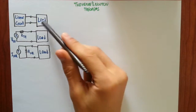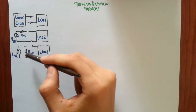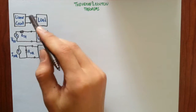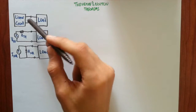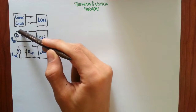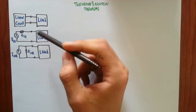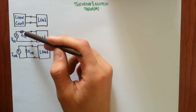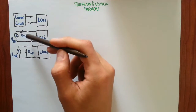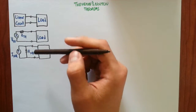Here I have drawn a Thevenin equivalent circuit and Norton equivalent circuit. Remember we were replacing a linear circuit with this Thevenin equivalent and Norton equivalent, and actually there is a relation between the Thevenin equivalent circuit and the Norton equivalent circuit.